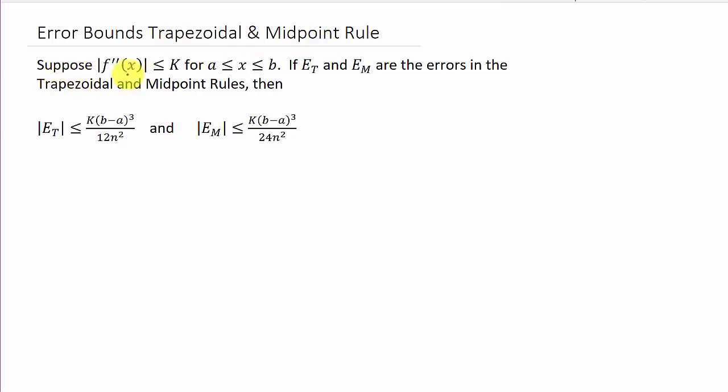So, suppose the second derivative, the absolute value of the second derivative, is less than or equal to k when x is between a and b. And if the error of the midpoint rule, e sub m, this right here is for the trapezoidal. Basically if e sub t and e sub m are the errors in the trapezoidal and midpoint rules, we're just looking at the midpoint.